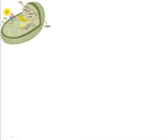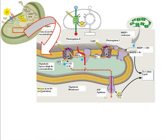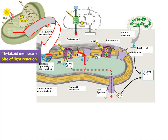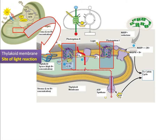Inside the chloroplast there are membranous sacs stacked one above the other, which is called as granum. This is a site of light reaction, on the thylakoid membrane. On the thylakoid membrane, photosystems and all other associated electron carriers and proteins are located. Thylakoid membrane is a site of light dependent reaction. These are the photosystems — photosystem 2 and photosystem 1 — and this is a picture of non-cyclic photophosphorylation.